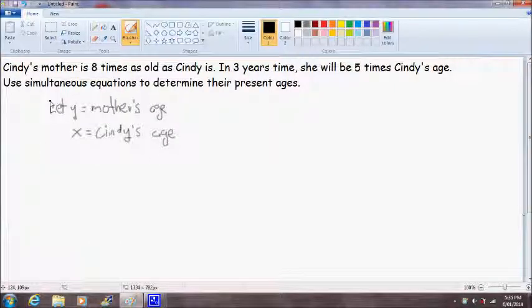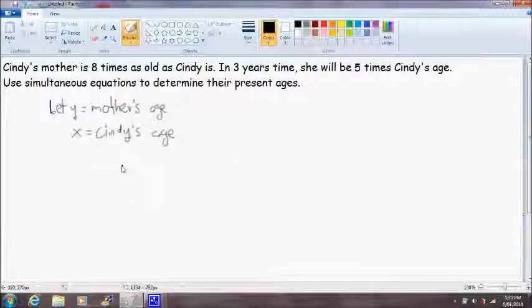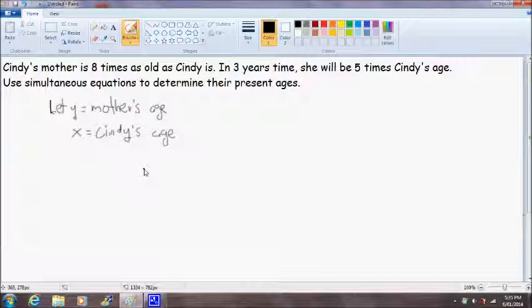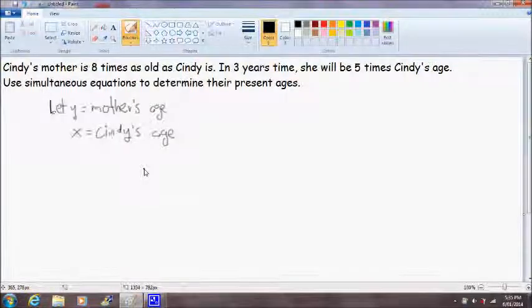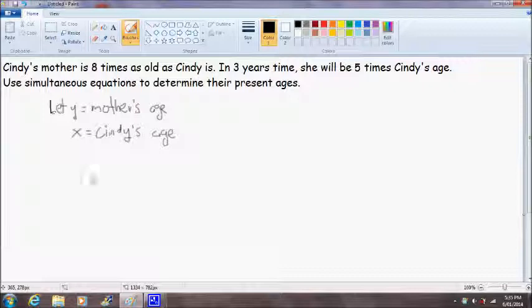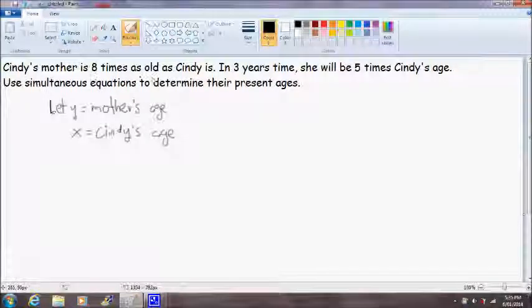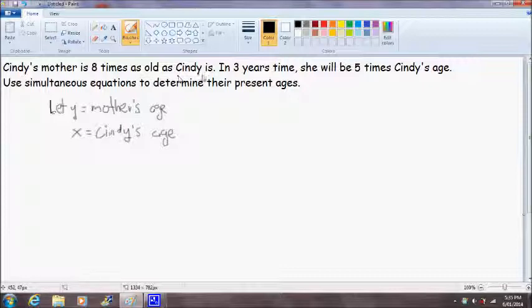Now we need to formulate some equations to help us solve this problem. We need to formulate two simultaneous equations. The first equation will be quite simple because we are given that Cindy's mother is 8 times as old as Cindy is. So our first equation will simply be y, Cindy's mother's age, is equal to 8x, which is Cindy's age.